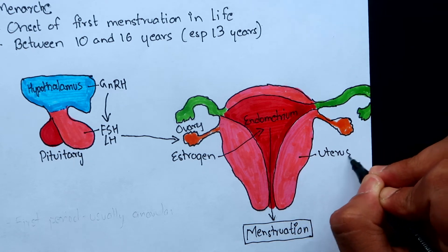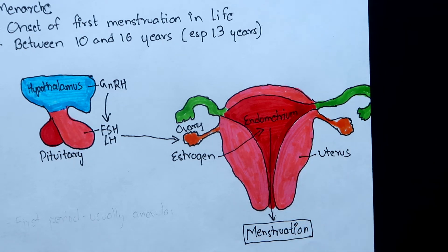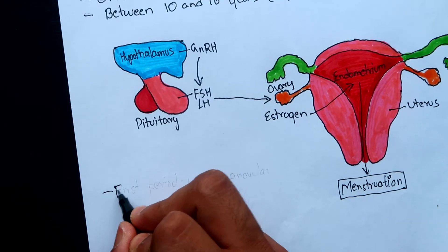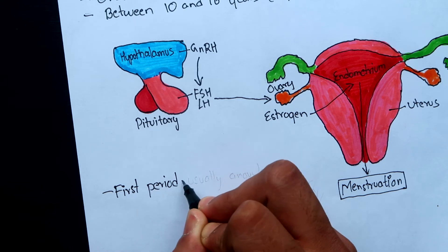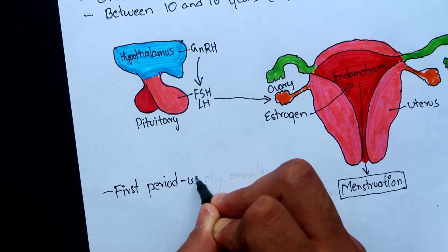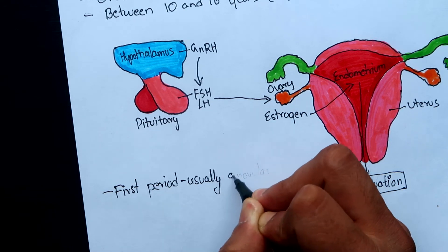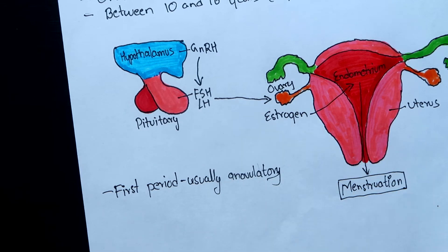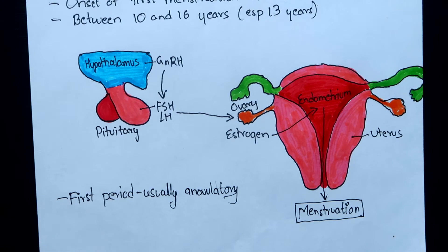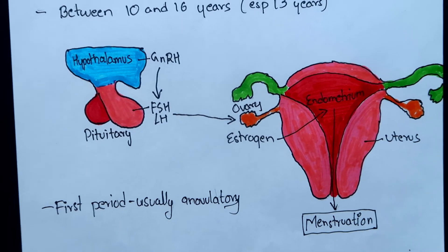Menarche denotes functioning ovaries, presence of responsive endometrium to endogenous ovarian steroids, and the presence of a patent uterovaginal canal. The first period is usually anovular, meaning no ovum is shed. Ovulation may be irregular for a variable period following menarche and may take about 2 years for regular ovulation to occur.